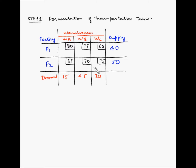After formulating the transportation table, we check whether total supply equals total demand. Total supply is 40 plus 50 = 90. Total demand is 15 plus 45 plus 30 = 90. Since supply equals demand, this transportation table is balanced, and we can proceed to step two: establishing the basic initial feasible solution using the least cost method.